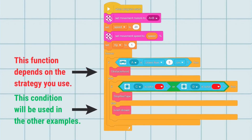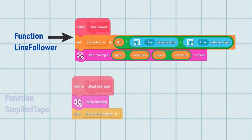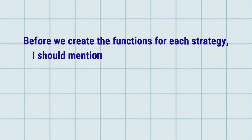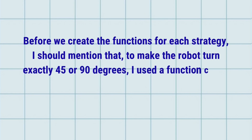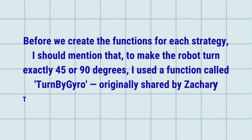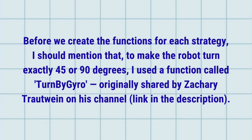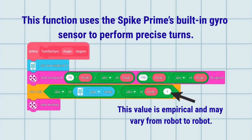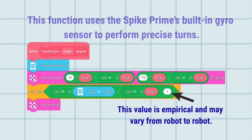The program is built around three functions: line follower, stopper tape — used in every strategy — and obstacle avoidance, which changes depending on how we decide to dodge the obstacle. Before we create the functions for each strategy, I should mention that to make the robot turn exactly 45 or 90 degrees, I used a function called turn baguero, originally shared by Zachary Trout Wine on his channel — link in the description. The turn baguero function uses the built-in gyroscope on the SPIKE Prime to make precise turns. Just a heads up: the value one in a wait-until block is based on trial and error, and it might be different for each robot.